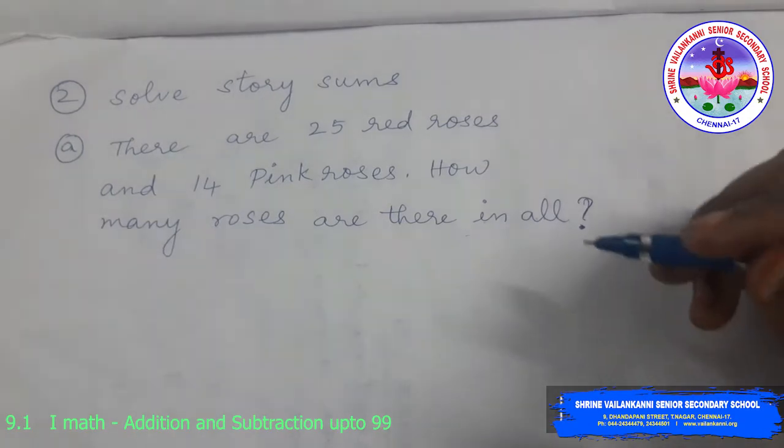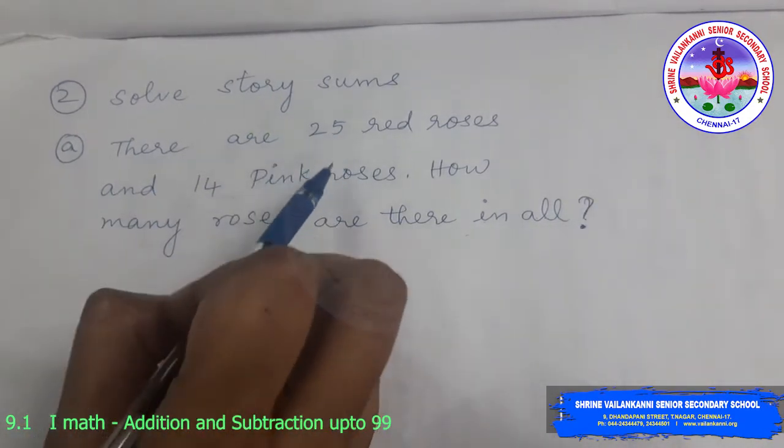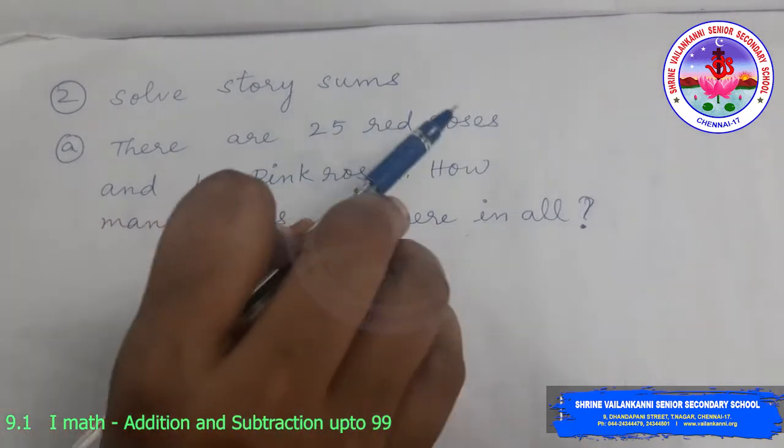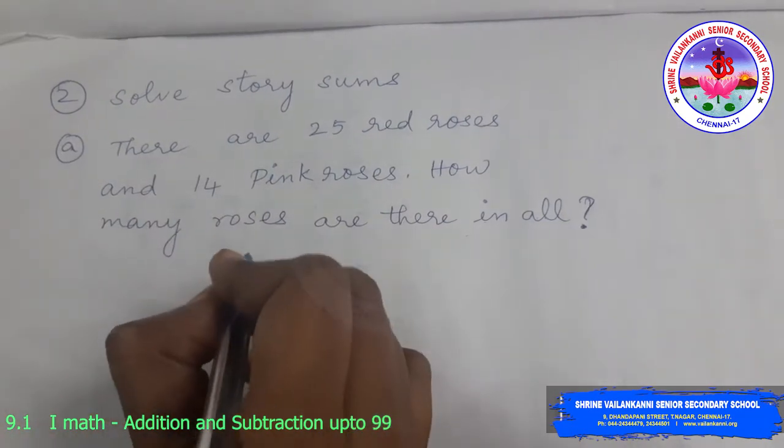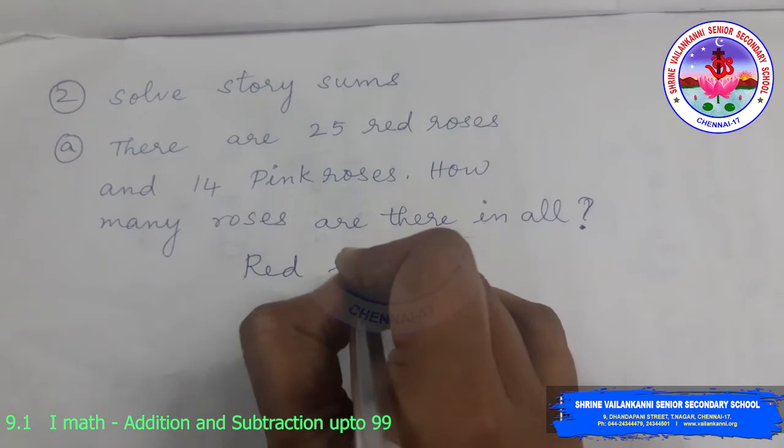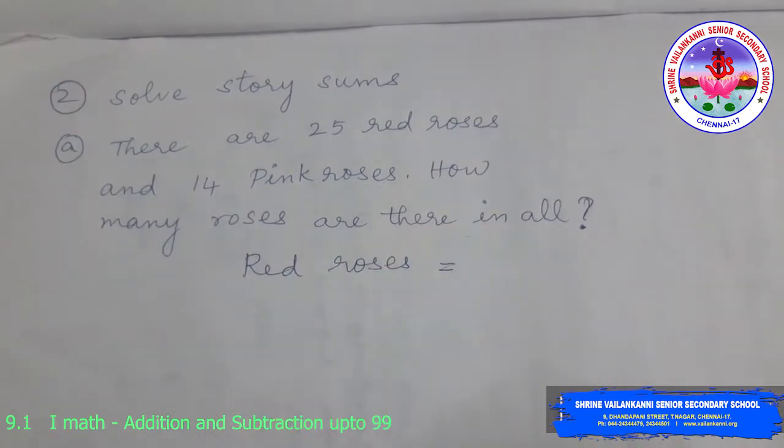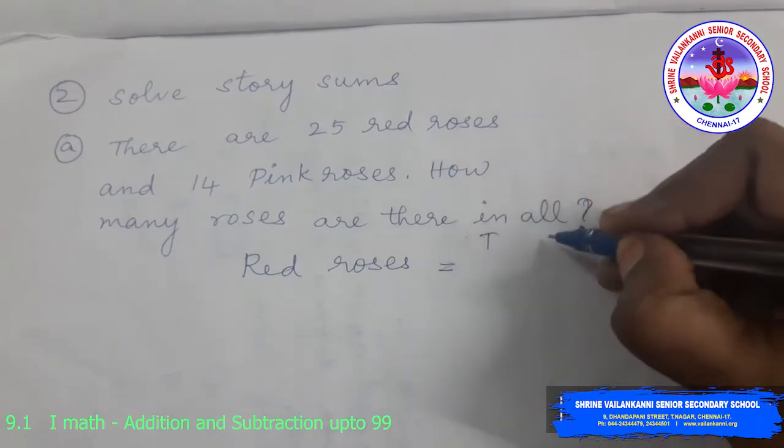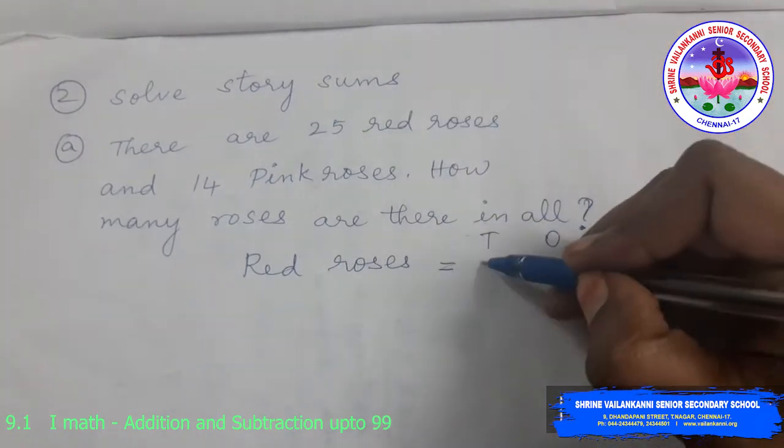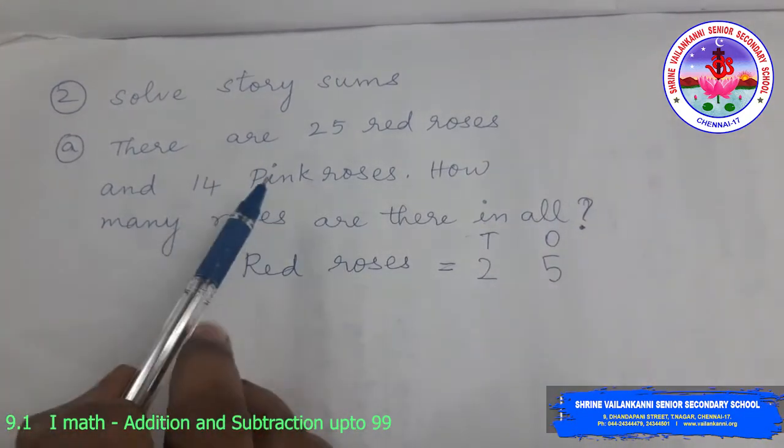So I will start writing the steps. That is, what are the things are there and what you have to find, you have to write. First, you have to write red roses. Red roses is equal to how much? You have to write 10s and 1s on the top. So red roses, there are 25. So 2 10s and 5 1s.